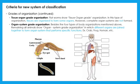All other higher animals show organ system grade organization. In this case, different organs are joined together to form specific functions. For example, crab, frog, human, etc.